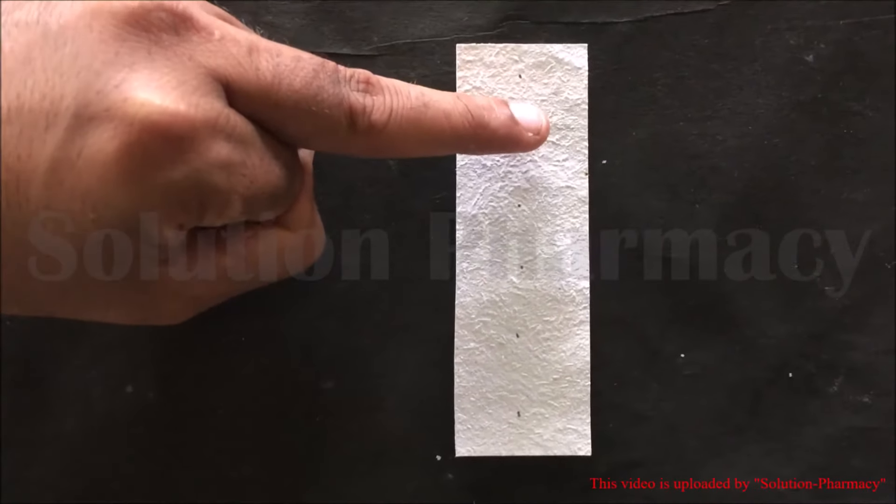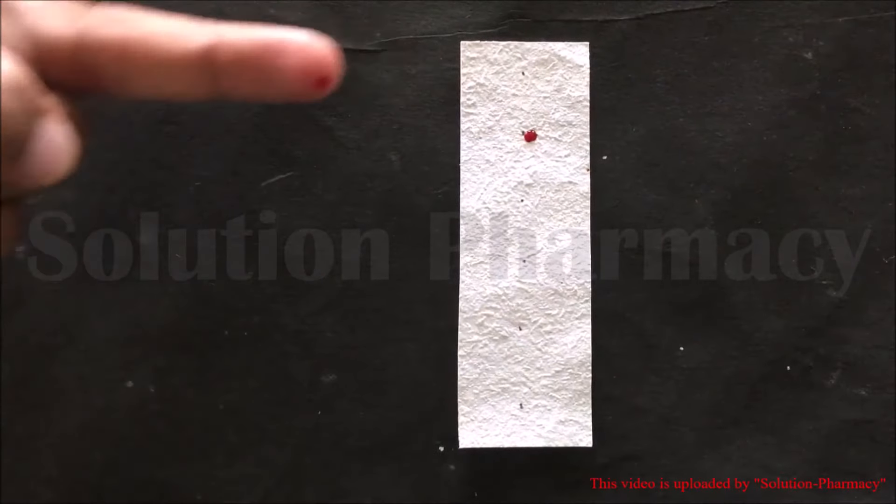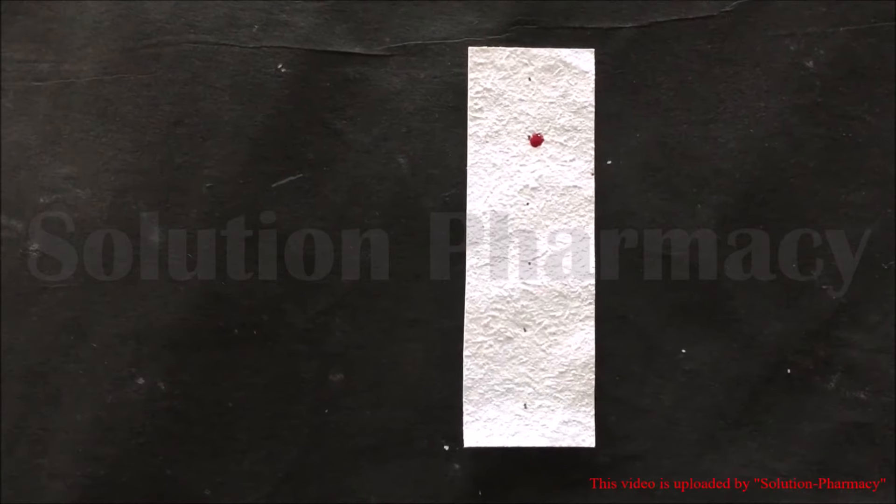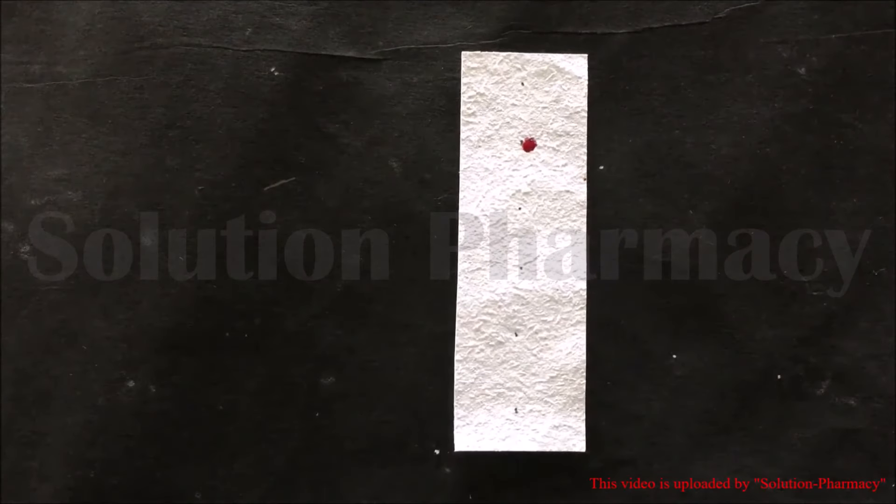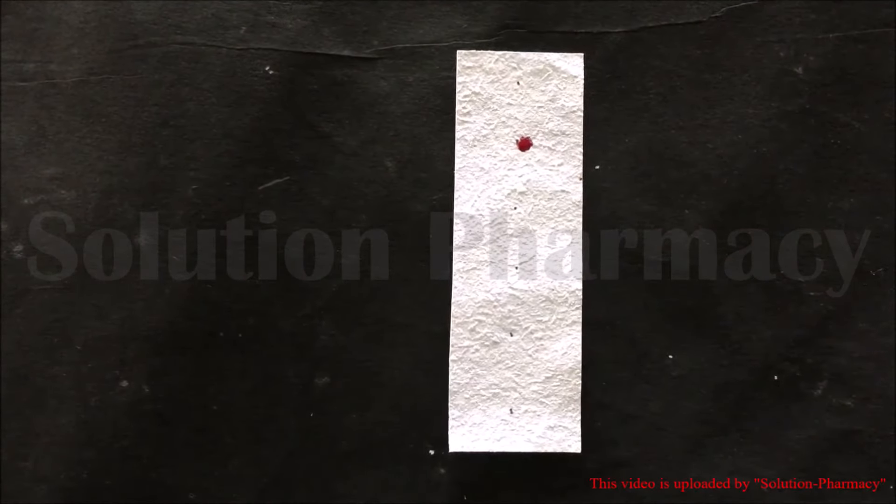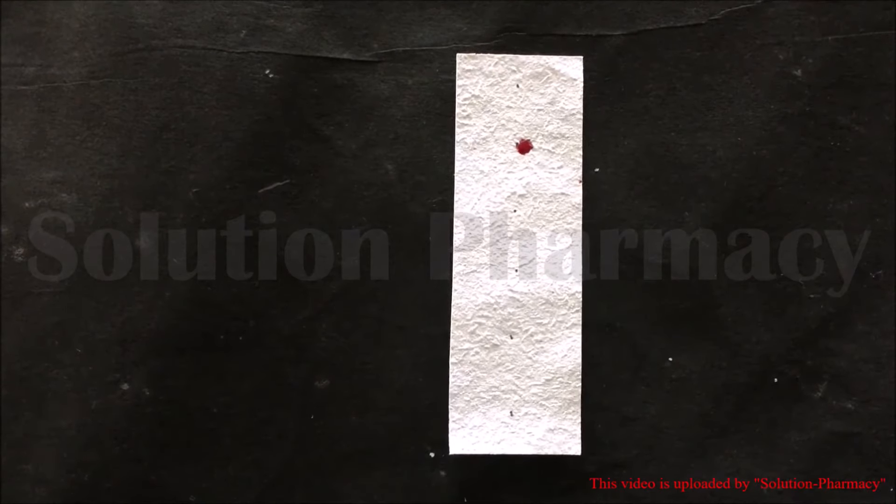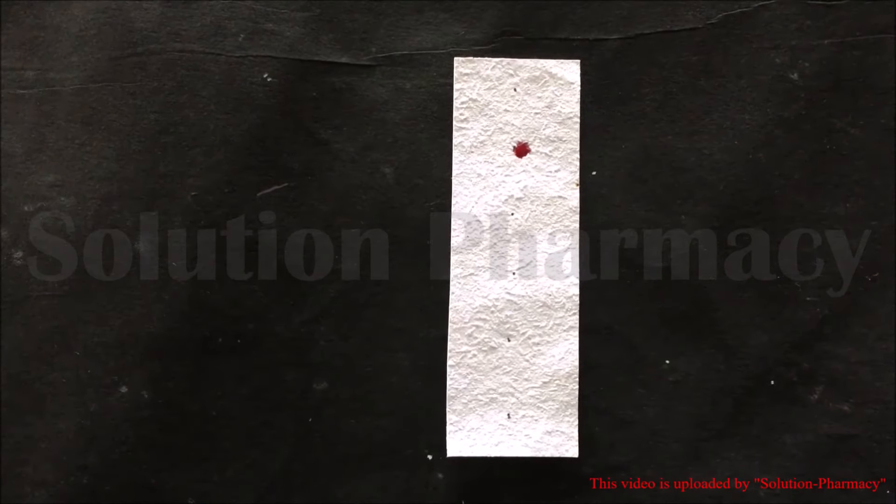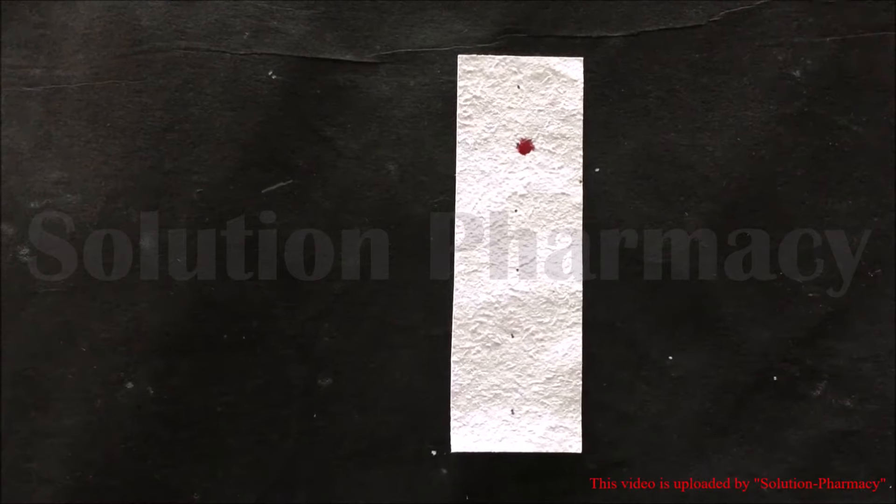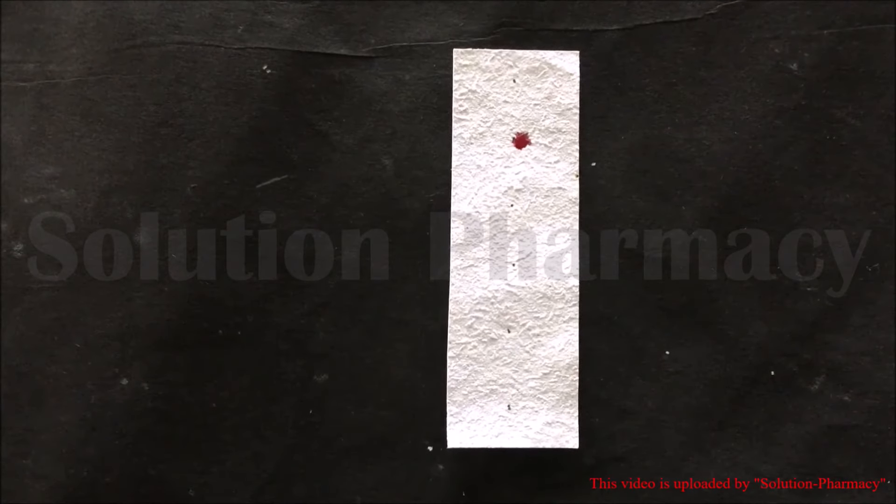Apply the drop of blood from the finger on filter paper by slightly touching the pricked side of the fingertip on filter paper. The filter paper will absorb the blood from the fingertip. Do not press or squeeze the finger during this process.